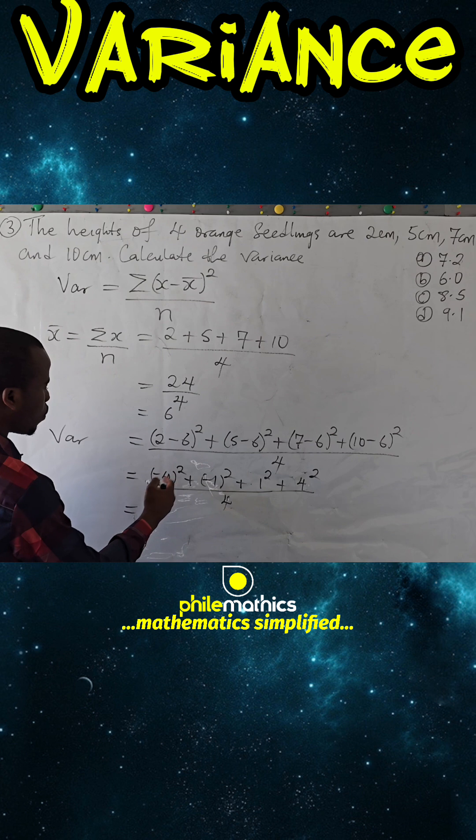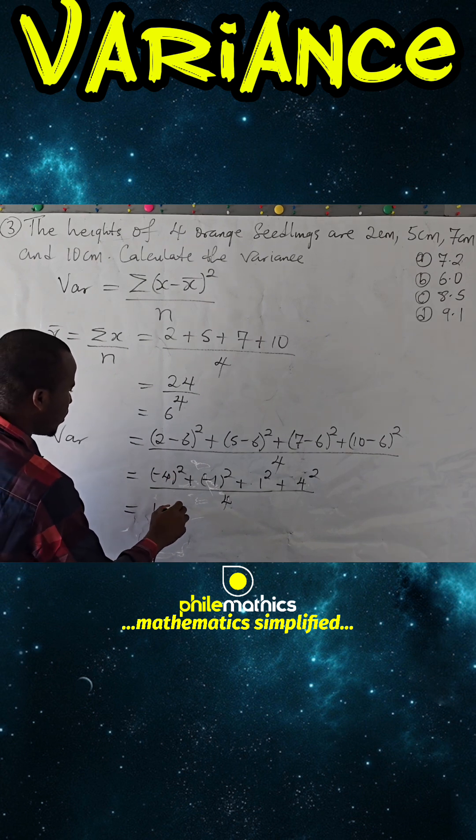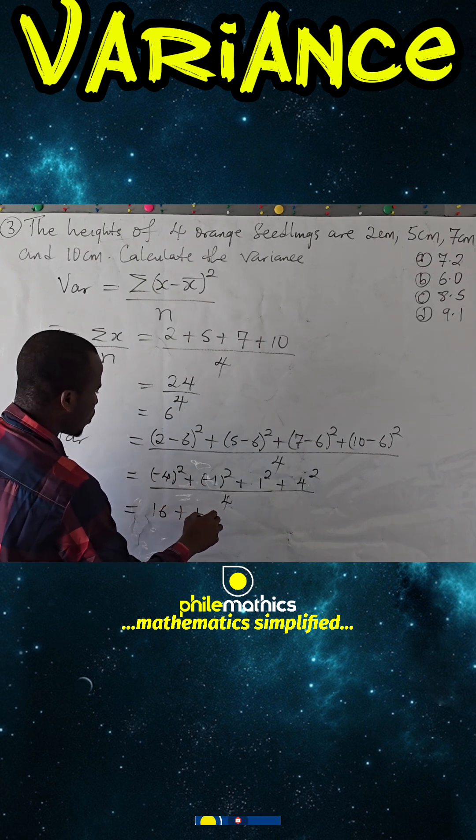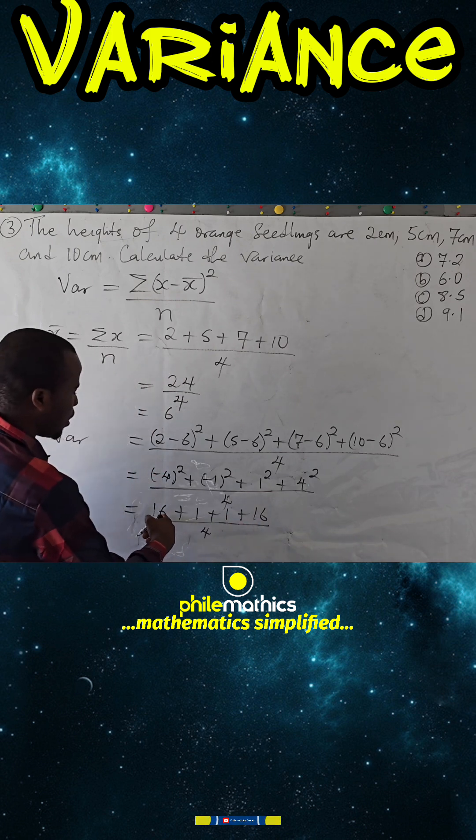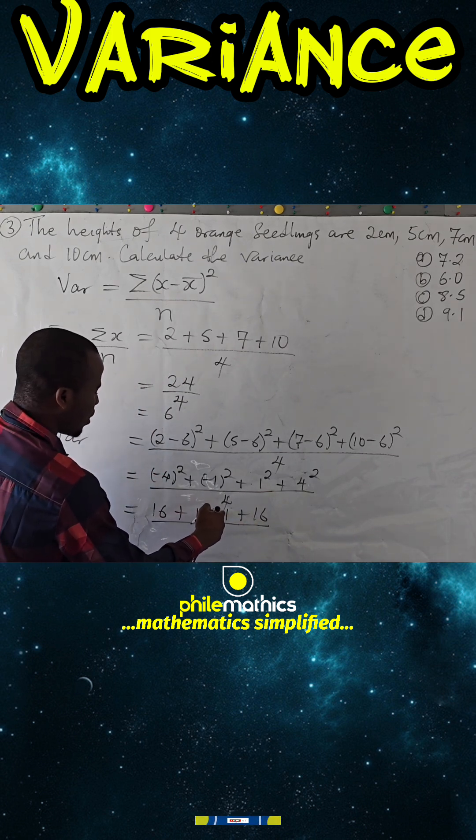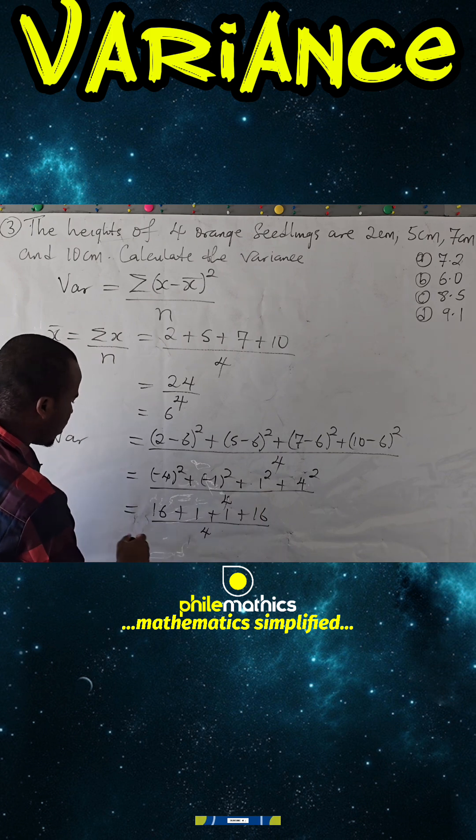So we have negative 4 squared is 16, negative 1 squared is 1, 1 squared is 1, 4 squared is 16. That's 16 plus 1 is 17, plus 1 is 18, plus 16 is 34, all over 4.